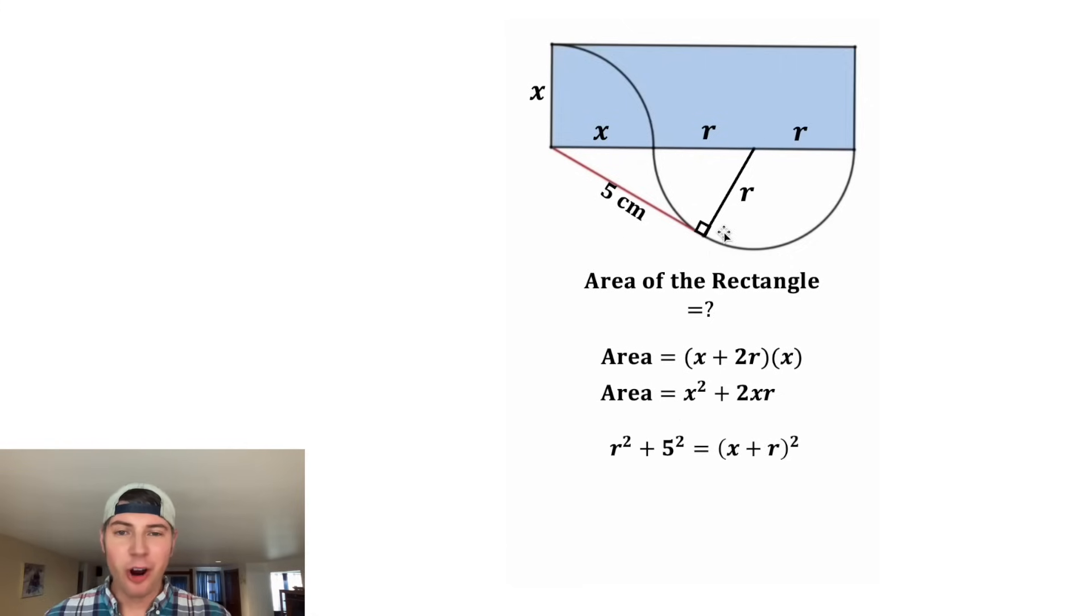r squared plus 5 squared equals the quantity (x + r) squared. We can bring down the r squared. 5 squared is 25, and (x + r) squared means (x + r) times (x + r). And after we multiply that out, we get x squared plus 2xr plus r squared. And then we can subtract r squared from both sides.